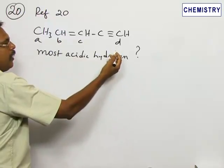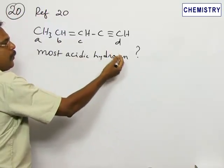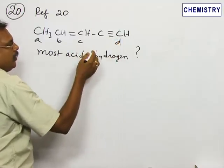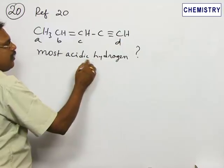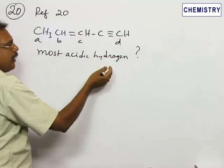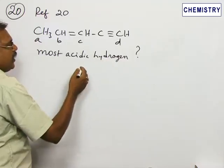...is attached to a carbon having a triple bond. Such hydrogens are more acidic, so they are called terminal alkynes. These types of hydrogens are found, for example...